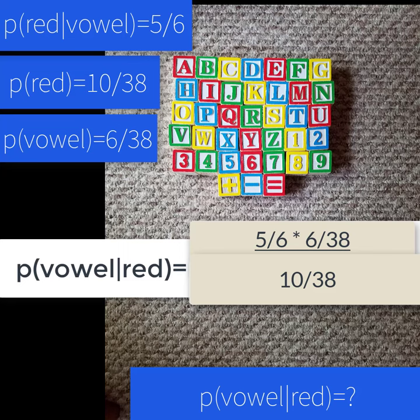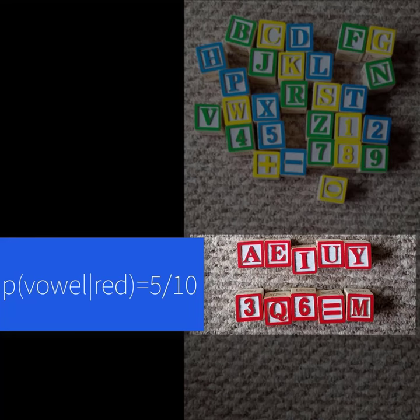And then when you simplify that math, you get 5 over 10, which is exactly what we found in our conditional probability video.